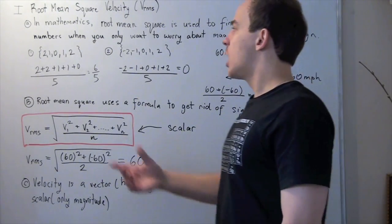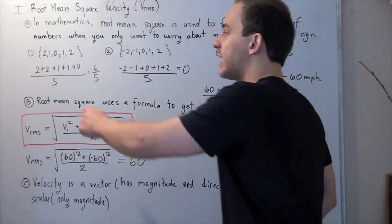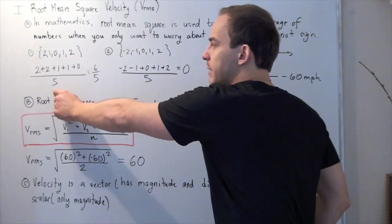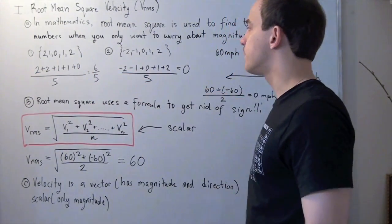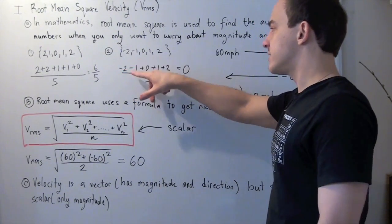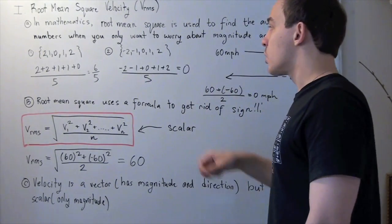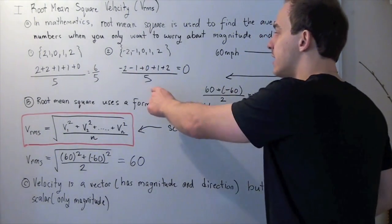I want to find the average of this set and this set. I add up all my values, divide them by 5, and get 6 over 5. And the same thing for this one: negative 2 minus 1 plus 0 plus 1 plus 2, divided by 5. Well, these cancel, and I get 0.